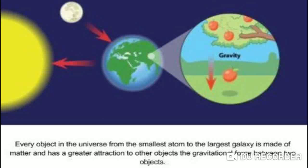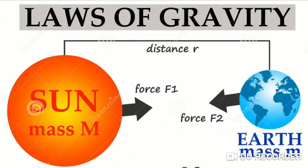The Sun exerts a gravitational pull on all planets. A planet keeps revolving around the Sun at a fixed distance in a fixed orbit. In the same way, satellites revolve around their planets.